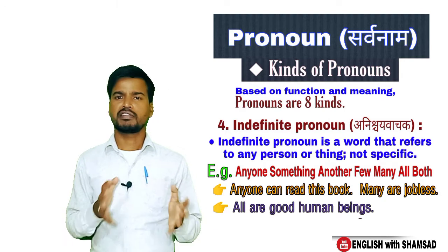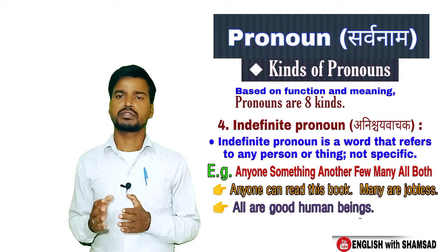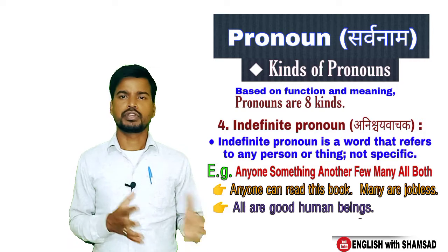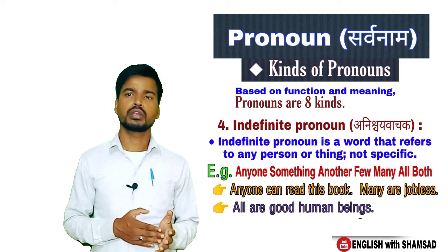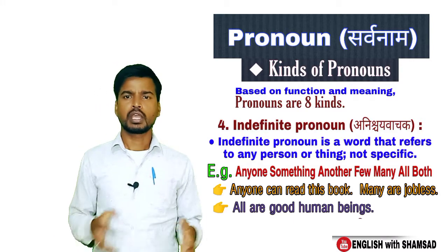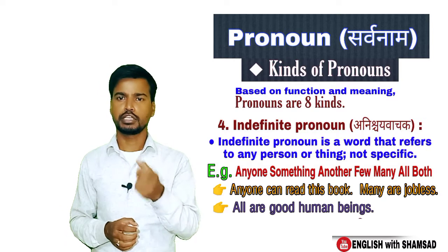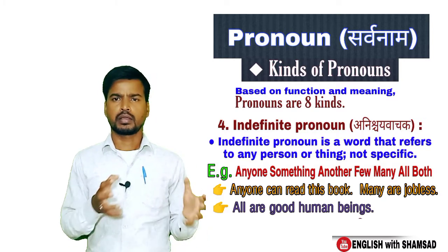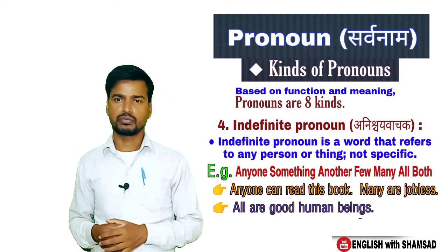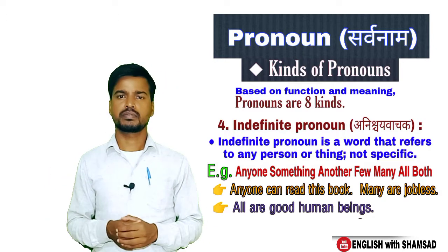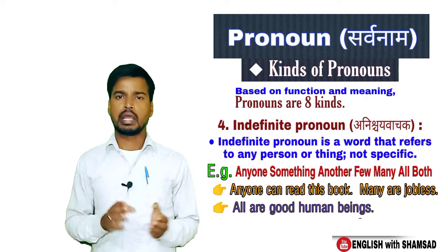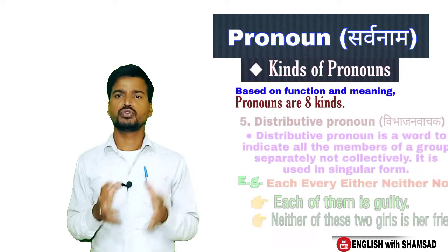The next kind of pronoun is indefinite pronoun. Indefinite pronoun is a word which refers to any noun or anything, not a specific one. For examples: anything, something, all, someone, few, many, etc. In a sentence: 'Anyone can read this book' — 'anyone' is an indefinite pronoun. 'Many are jobless' — 'many' is an indefinite pronoun. 'All are good human beings' — 'all' is an indefinite pronoun.